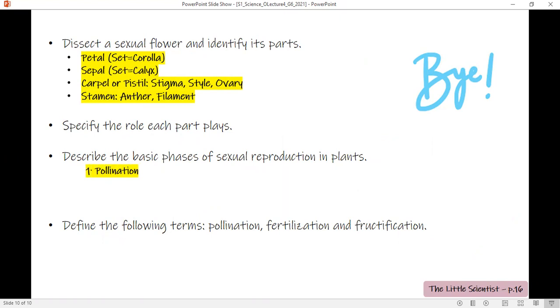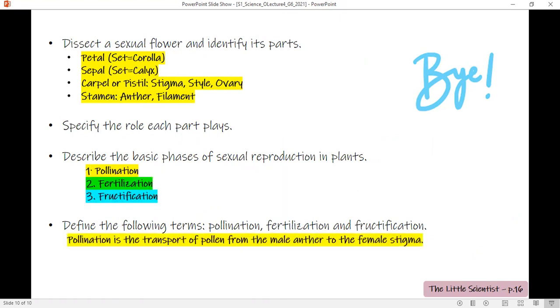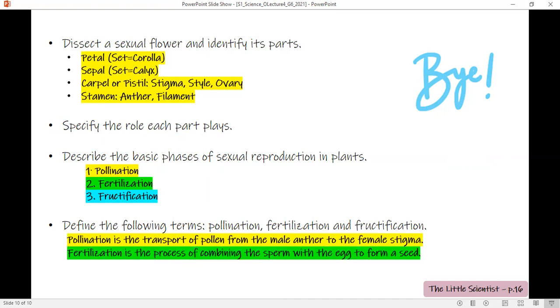The sexual reproduction in plants happens in three steps: pollination, fertilization, and fructification. What's pollination? It is transporting or transferring pollen grains from the male anther to the female stigma. Fertilization is the combination—it's combining a male sex cell, which is the sperm.